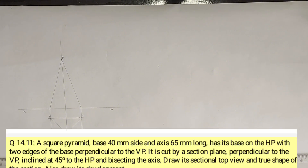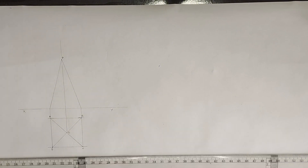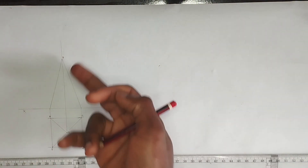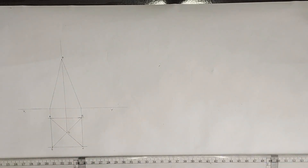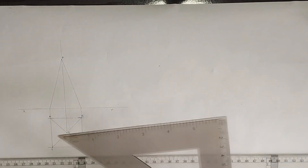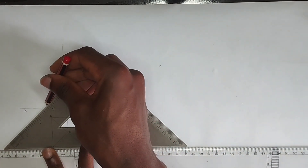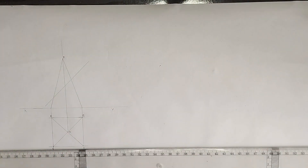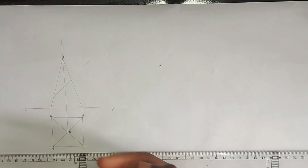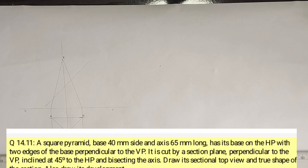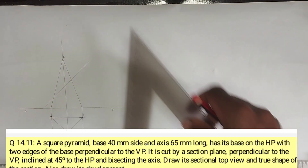We are told the cutting plane is perpendicular to the VP and inclined at 45 degrees to the HP. Using a 45-degree set square, draw the cutting plane at 45 degrees bisecting the axis. Since no specific height is given for the cut, we use a convenient height.